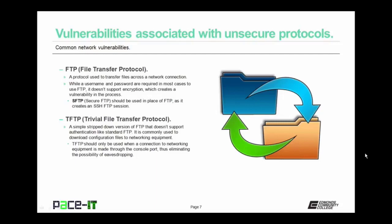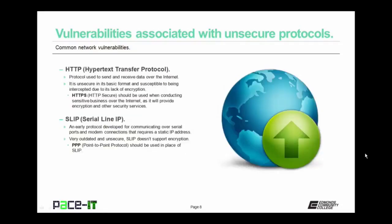TFTP should only be used when a connection to networking equipment is made through the console port, thus eliminating the possibility of eavesdropping. And that console port should have its own security measures in place. HTTP, or Hypertext Transfer Protocol, is the protocol used to send and receive data over the internet. It is unsecure in its basic format and susceptible to being intercepted due to its lack of encryption. HTTPS, or HTTP Secure, should be used when conducting sensitive business over the internet, as it will provide encryption and other security services.